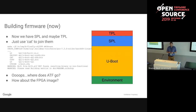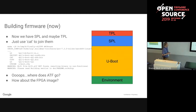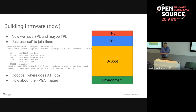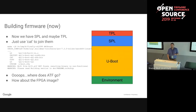Things have changed a lot in the last decade. We now have SPL, a secondary program loader that runs in SRAM and loads U-Boot. We even have TPL for when you need something even smaller. You end up with more things in your image - things like trusted firmware - and some boards have an FPGA image, so it's getting more complicated.